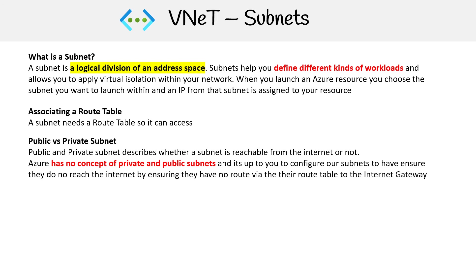There are public and private subnets. This is interesting because if you're using AWS, those are very clearly defined things. But in Azure, they don't have this concept of public and private — you have to define it yourself.